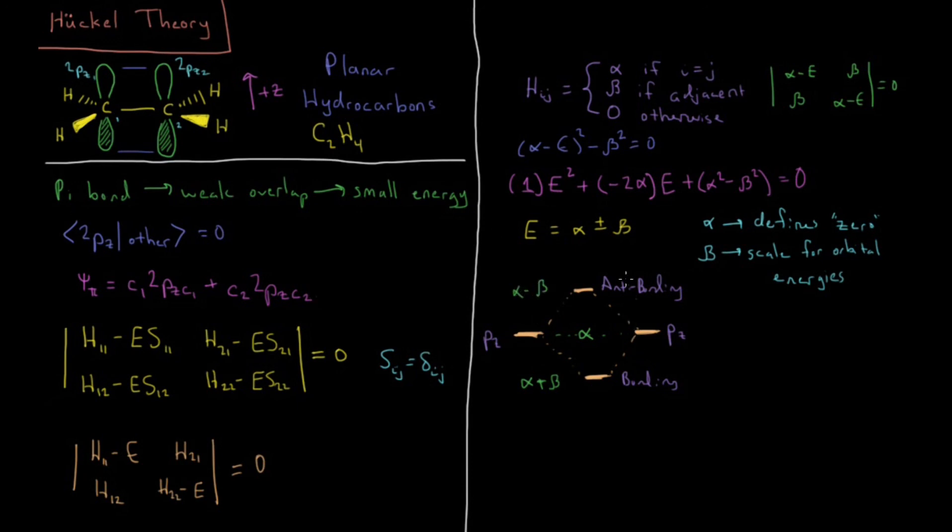And beta has been determined empirically. This is an approximation, so it's going to be an approximate value. But the empirical value of beta has been determined through various experiments to be about minus 75 kilojoules per mole. So the energy of this pi bond in ethylene is about 75 kilojoules per mole, because its energy relative to the reference state is one beta of energy lower than the reference, giving us a pi orbital energy of about 75 kilojoules per mole.